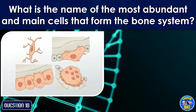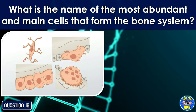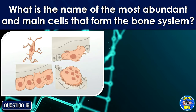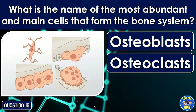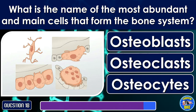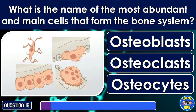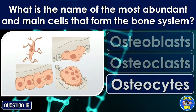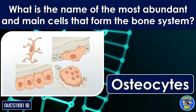What is the name of the most abundant and main cells that form the bone system? Osteoporosis.